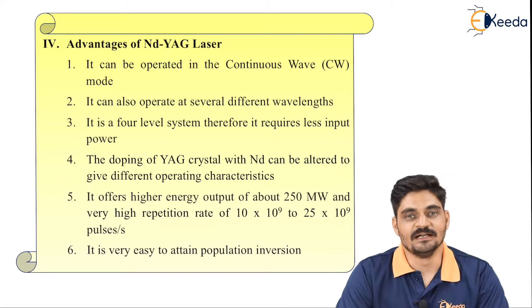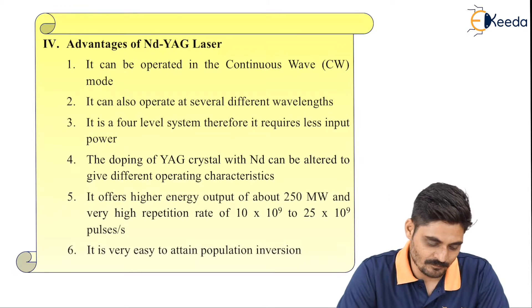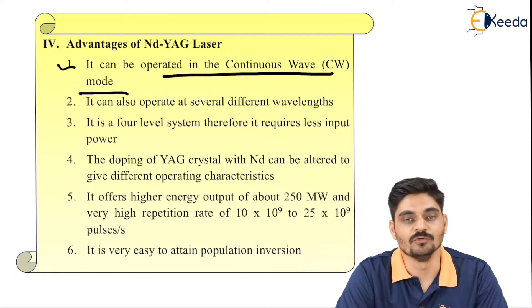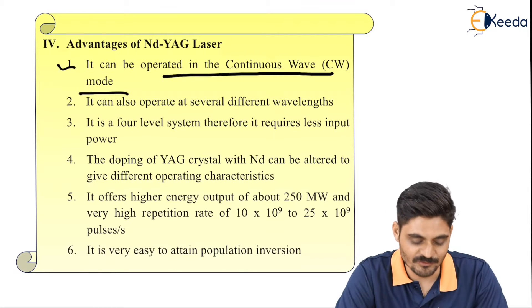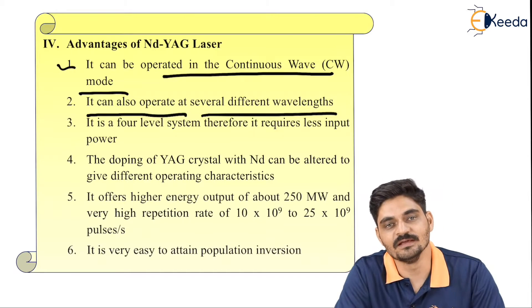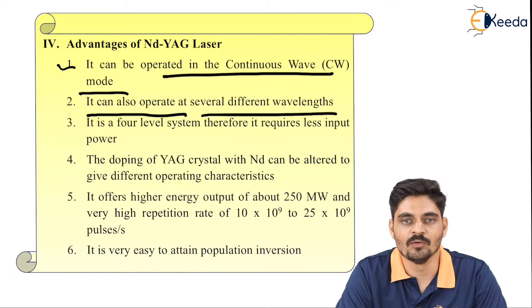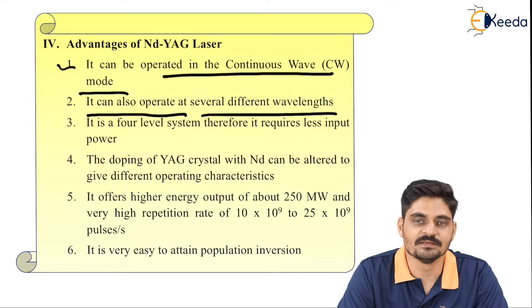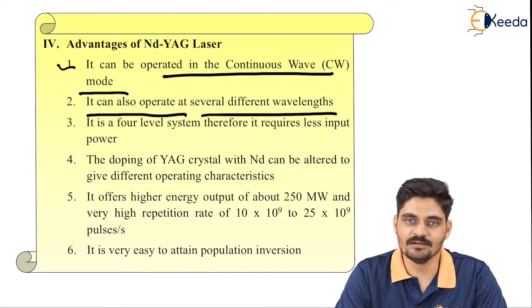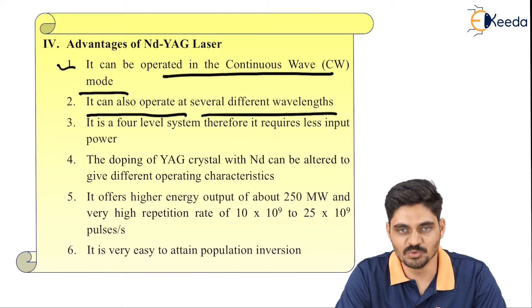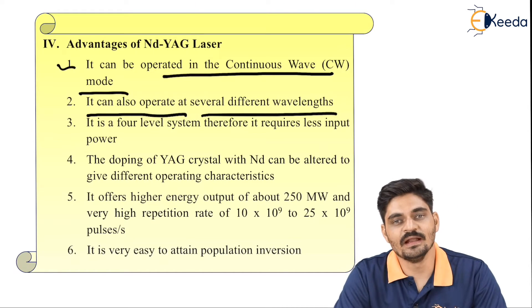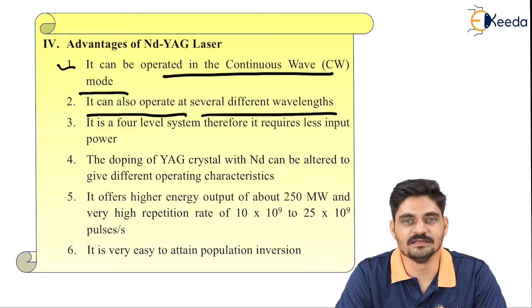What are the advantages of Nd:YAG laser? Nd:YAG laser can be operated in continuous wave mode, so it can produce continuous output. It can also operate at several different wavelengths, unlike the helium-neon laser where only red color radiation is possible. In Nd:YAG laser, you can have many different wavelengths.